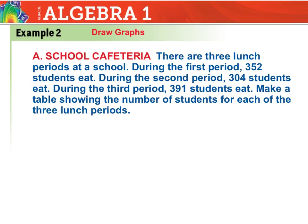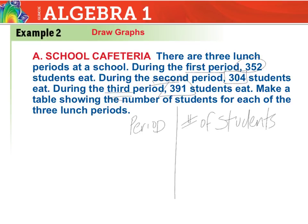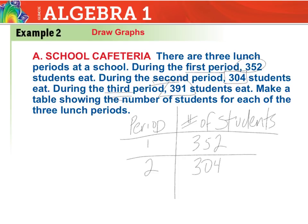Now we're going to draw a graph and make a table for this scenario. There are three lunch periods at school. During the first one, there are 352 students; the second has 304; and the third has 391. Our two variables are the period you eat lunch and the number of students. So in the first period: 352; second period: 304; third period: 391.